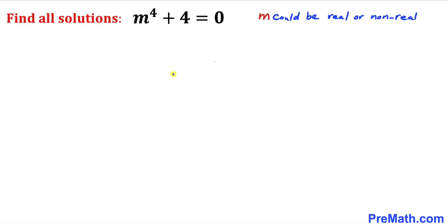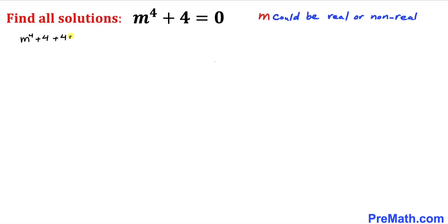Let's get started with the solution. The very first thing we are going to do is manipulate this given equation. We are going to add 4m² and subtract 4m² at the same time, so therefore this equation can be written as m⁴ + 4 + 4m² - 4m² = 0.